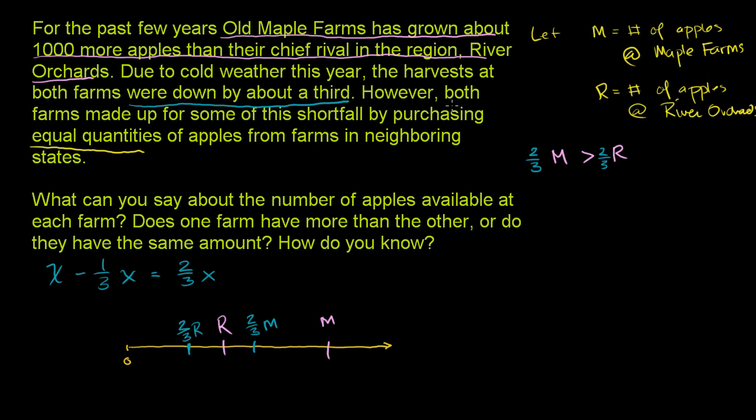Now, they say both farms made up for some of the shortfall by purchasing equal quantities of apples from farms in neighboring states. So let's let A be equal to the quantity of apples both purchased.